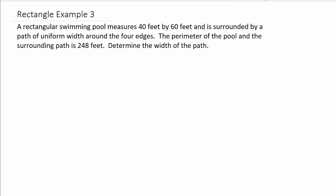We have a rectangular swimming pool that measures 40 feet by 60 feet and is surrounded by a path of uniform width around the four edges. The perimeter of the pool and the surrounding path is 248 feet. Determine the width of the path.